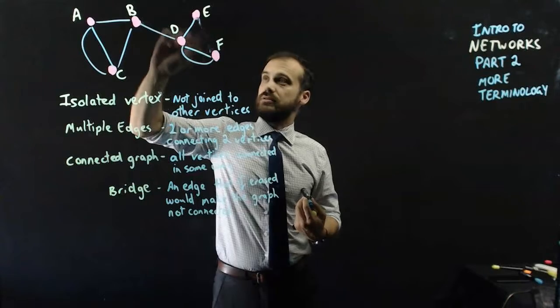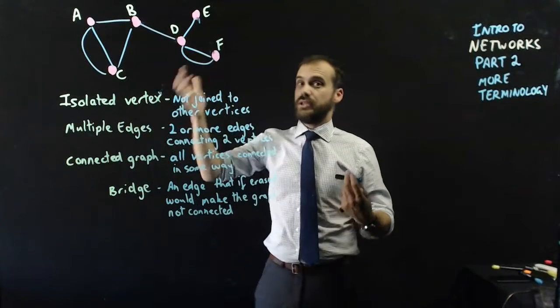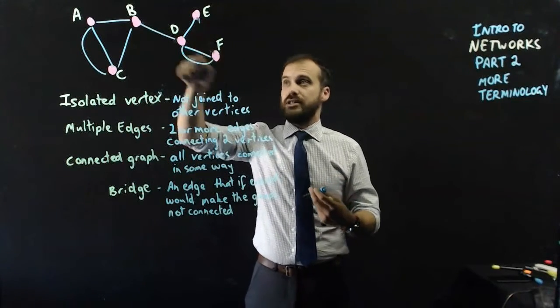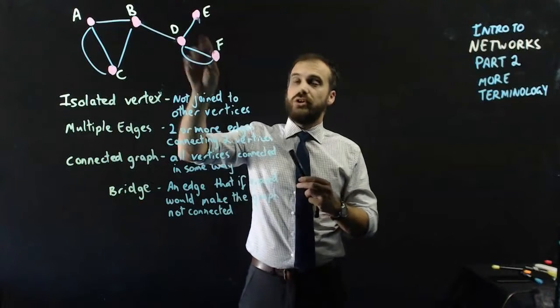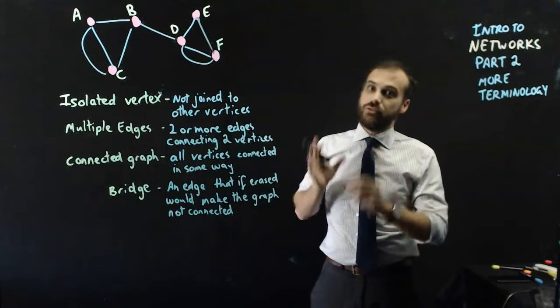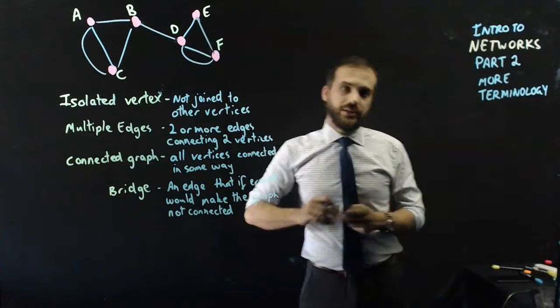If I delete this edge, everything's still connected. I can still get from F to E. I just need to go through D. So that's not a bridge. A bridge, if I get rid of it, my graph is no longer connected.